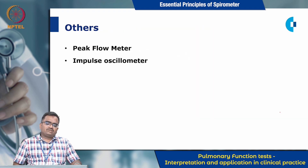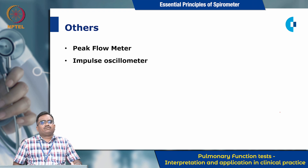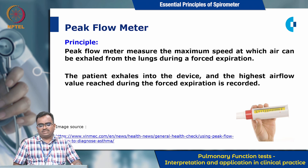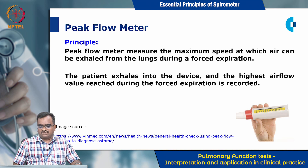Apart from spirometers, other devices used to measure pulmonary function include the peak flow meter and the impulse oscillometer. The peak flow meter works based on the principle of airflow rate — it measures the maximum speed at which air can be exhaled from the lungs during forced expiration. The patient exhales into the device and the highest airflow value reached during forced expiration is recorded.